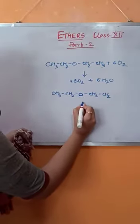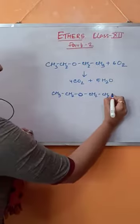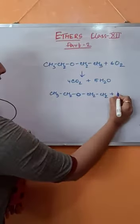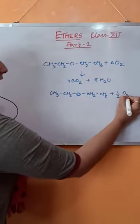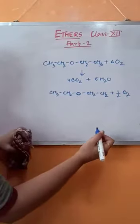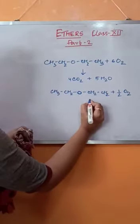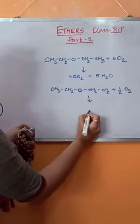In presence of air, or if ethers are exposed to air and in presence of light, they will form peroxides.